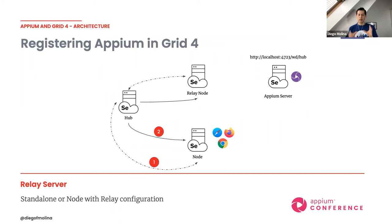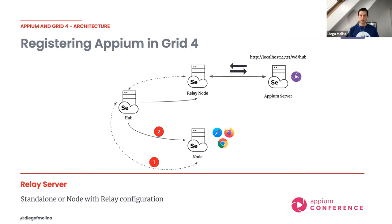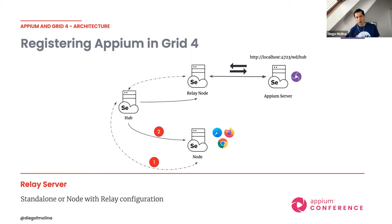The relay node acts as an intermediary between the grid and the Appium server. It registers itself with the grid as a node, and relays traffic to the Appium server. When you create a session, the request goes to the hub, which finds the relay node matching the capabilities, and the relay node forwards all requests to the Appium server endpoint at localhost:4723/wd/hub. Whatever the Appium server replies is forwarded back to you as the user.